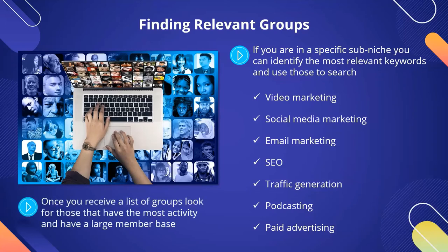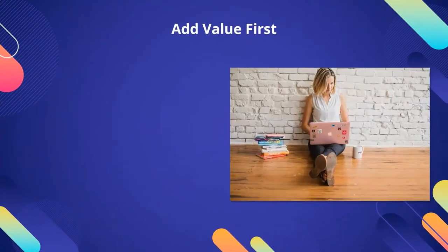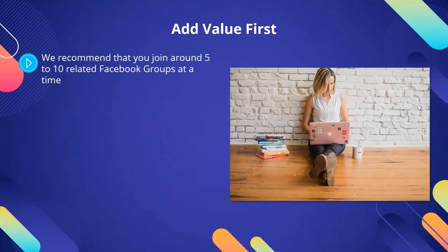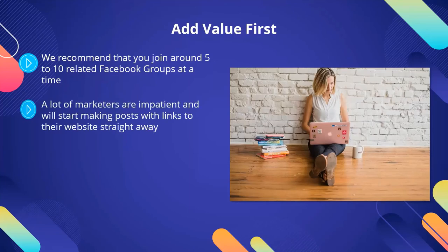If a group is closed, and a lot of them are, then you will not be able to see activity. In this case, you will need to request to join the group, and once accepted, you can then see the activity levels. Add value first. We recommend that you join around 5 to 10 related Facebook groups at a time. Not all of them are going to be winners. When you join each group, be sure to read the rules and any guidelines. A lot of marketers are impatient and will start making posts with links to their website straight away. You do not want to do this — it can get you banned from a group very quickly. You need to add value to the group before you start trying to drive traffic to your site.